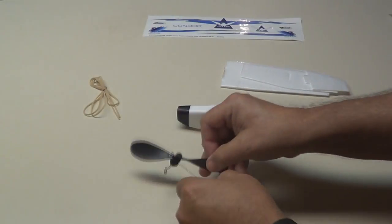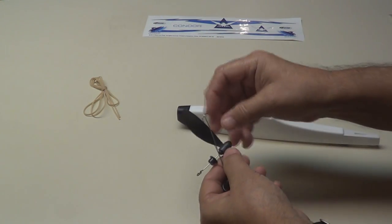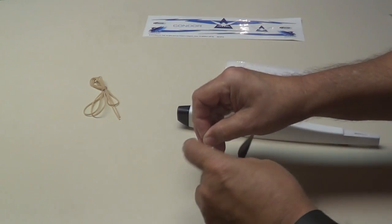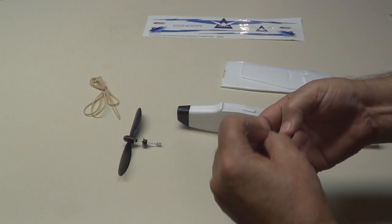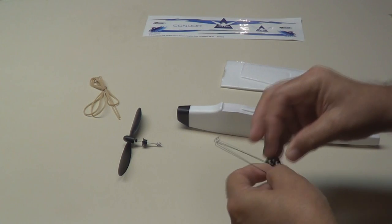Here's your rubber bands, propeller. Looks like the wheels are wrapped around it here. Unlock the wheels. There we go.